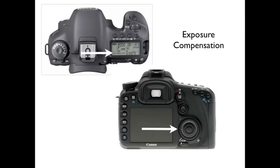For exposure compensation: when you're in program mode, shutter priority, or aperture priority, the camera is in charge of giving you a correct exposure. If you want to override that and intentionally over- or underexpose, turn this dial right here. As long as the dial is not locked, you'll be able to turn it — right now the dial is locked, so it would have to be moved to the left to unlock it. Once unlocked, you can see your exposure level indicator and intentionally overexpose or underexpose your image.